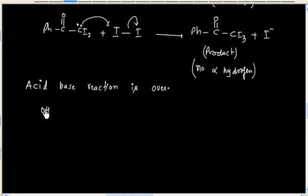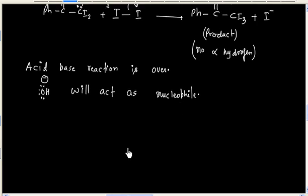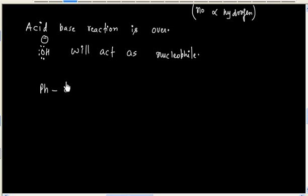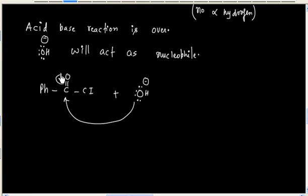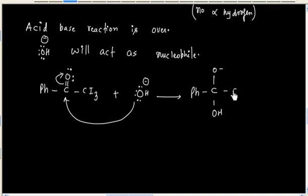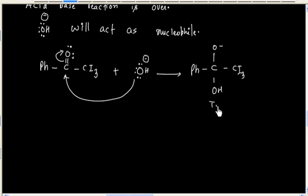Now OH- will act as a nucleophile. In the next step, OH- will act as a nucleophile and it will attack on the carbonylic carbon. At the same time, we can open this double bond and we will have a tetrahedral intermediate formed.